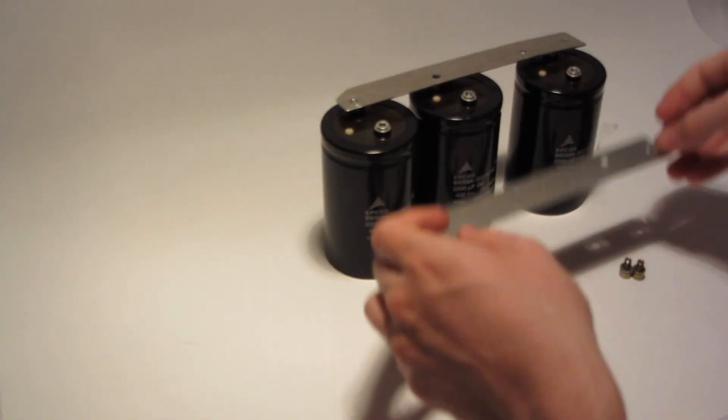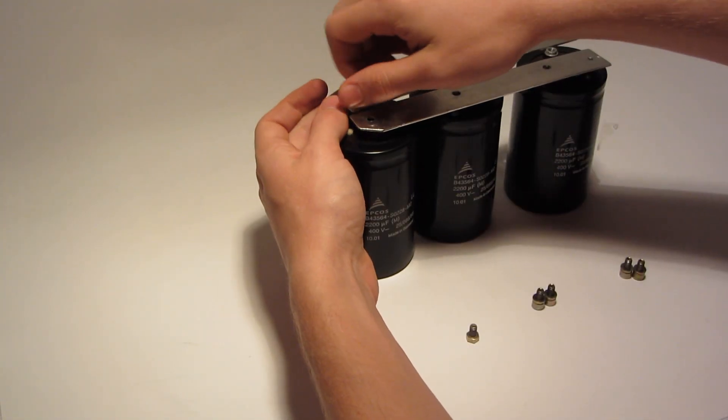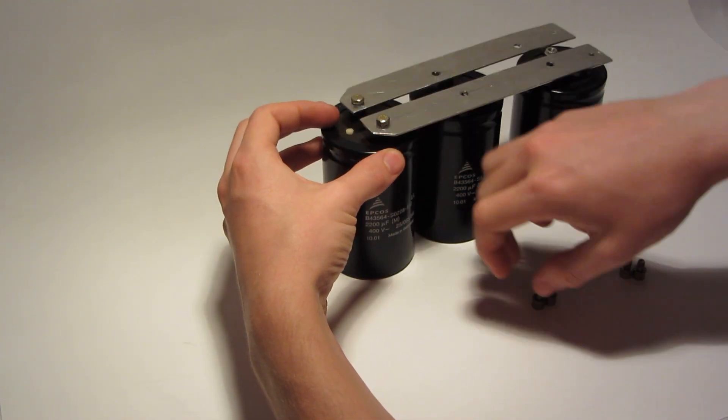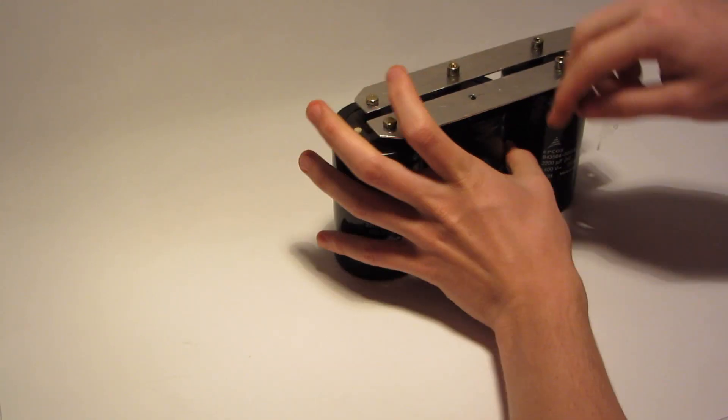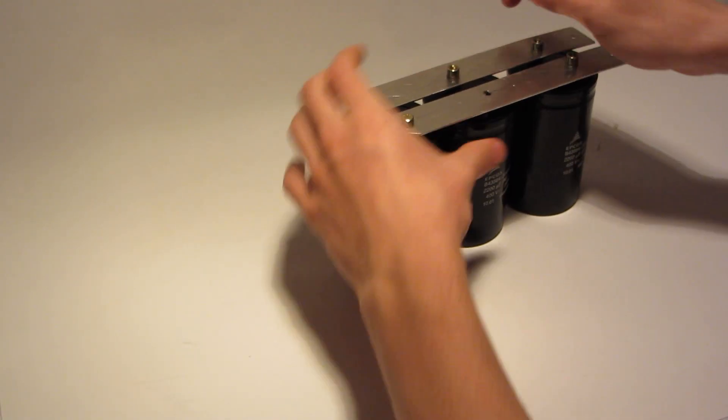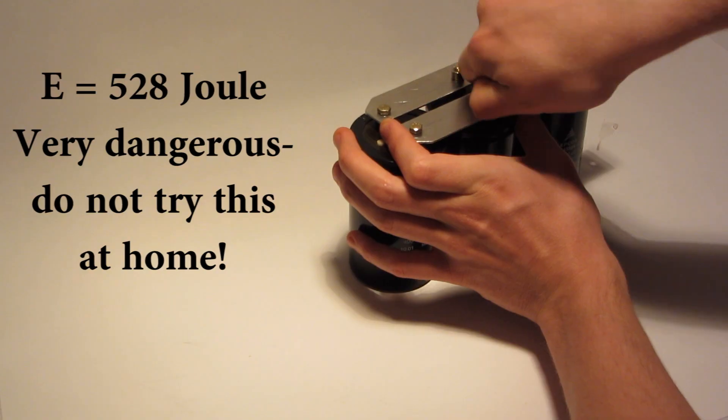This is the capacitor bank I am using as energy source. It consists of three capacitors with each 2200 microfarads at 400 volts. This equals an electrical energy of 528 Joules.